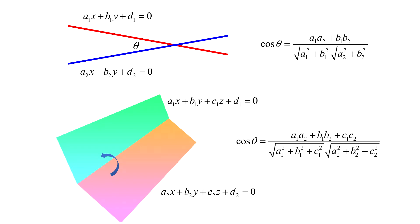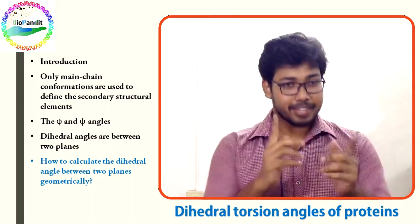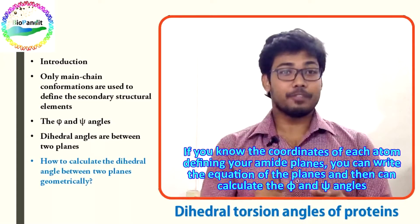Now, what about planes? A plane is expressed in 3D, so the first equation becomes a1x + b1y + c1z + d1 = 0, and the second becomes a2x + b2y + c2z + d2 = 0. The dihedral angle between these two planes is simply calculated using the corresponding formula.